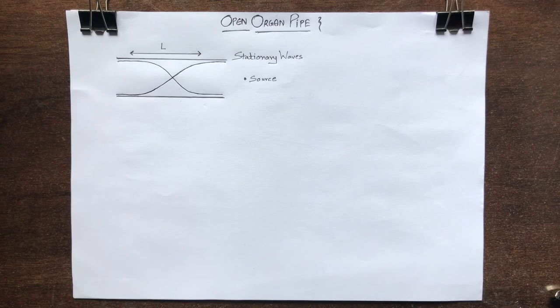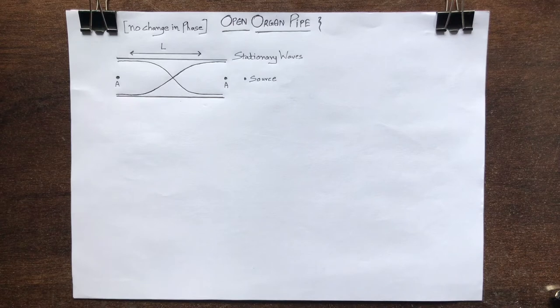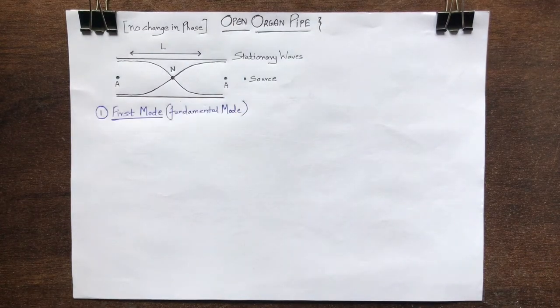Since the pipe is open at both ends, there is an antinode at each end. The reflection at the open end of the pipe introduces no change in phase and gives rise to the formation of the first mode, also known as the fundamental mode.